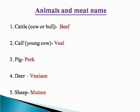Let's discuss the class topic: Animals and their meat names. One of the animals is cattle. Cattle is called cow or bull, and its meat is called beef.